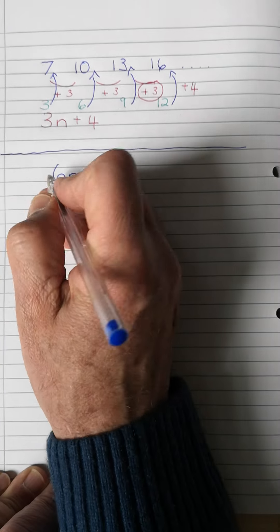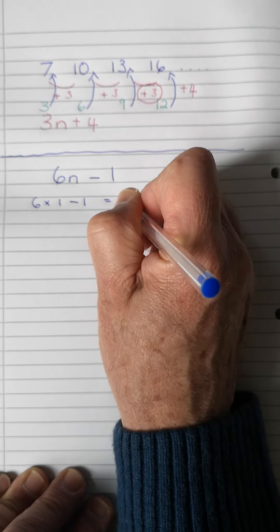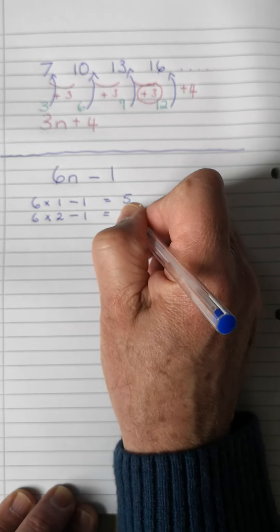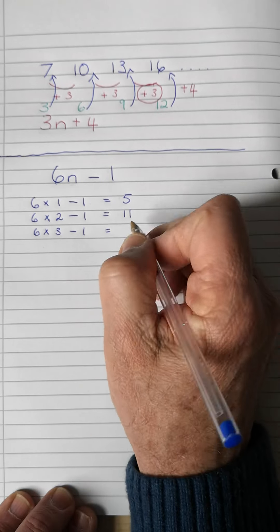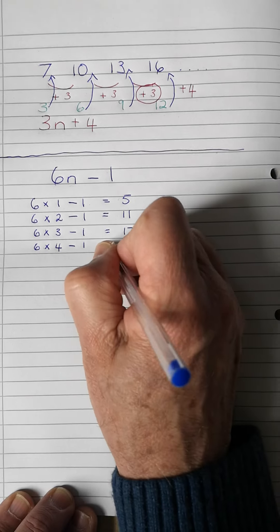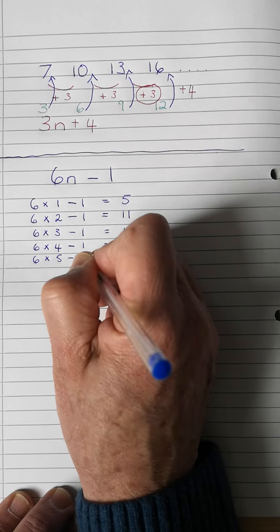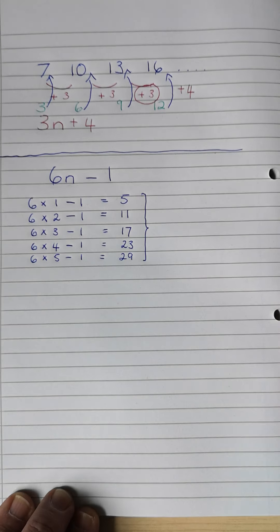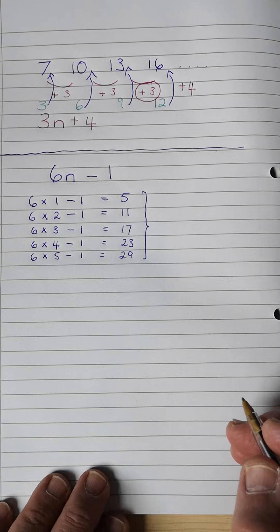This is a six times table. First term: 6 times 1 minus 1 gives me 5. Second term: 6 times 2 minus 1 — six times two is 12, minus one is 11. Third term: 6 times 3 minus 1 is 17. Fourth term: 6 times 4 minus 1 gives me 23. Fifth term: 6 times 5 minus 1 gives me 29. There we go — I've written down the first through fifth terms for 6n minus 1.